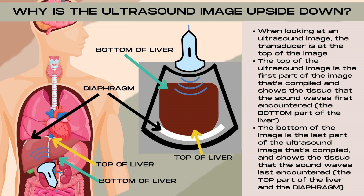When looking at an ultrasound image, the ultrasound transducer is at the top of the image. The top portion of the image is composed from all the echoes returning from superficial depths in the tissue. Over time, as the sound waves go deeper and deeper into the tissue and return reflections from deeper structures, those echoes compose the bottom portion of the image. So the top portion of the image is the early or superficial echoes, and the bottom portion is the deep or later echoes.